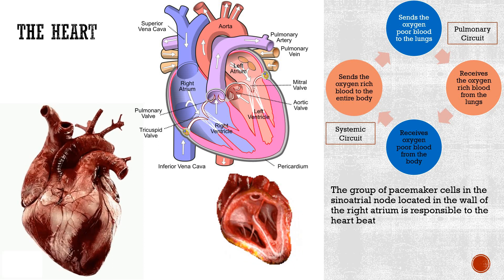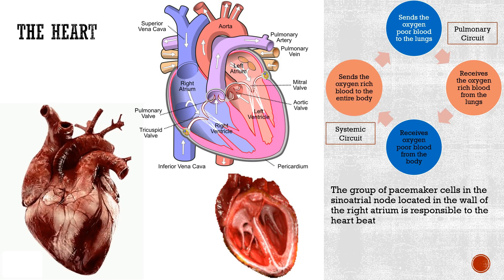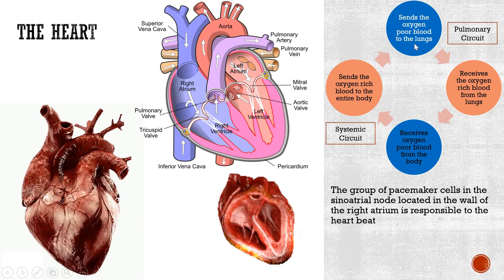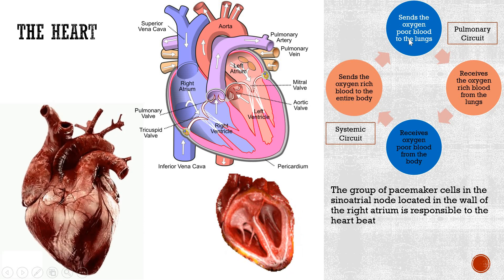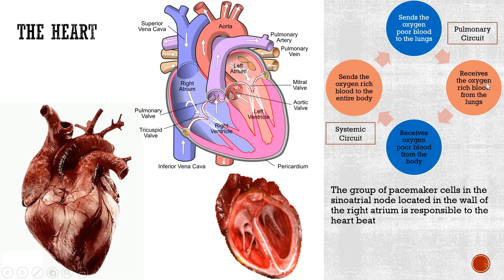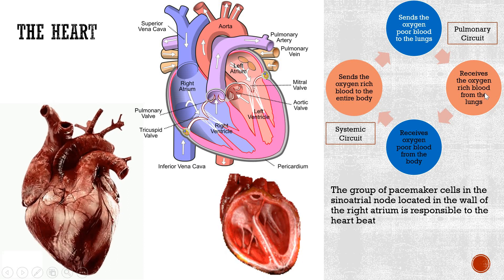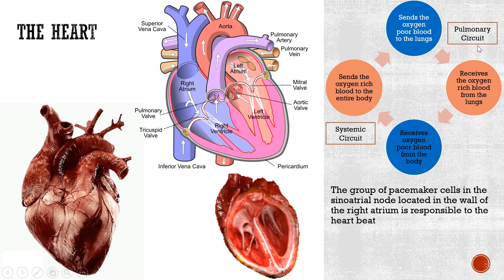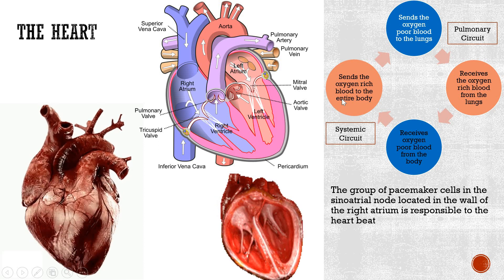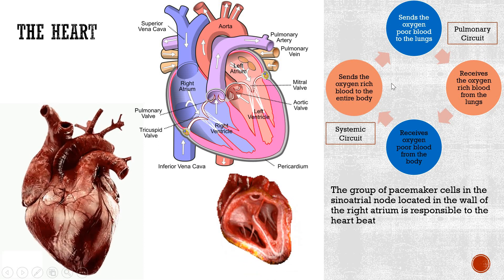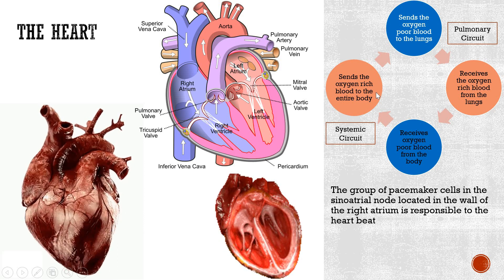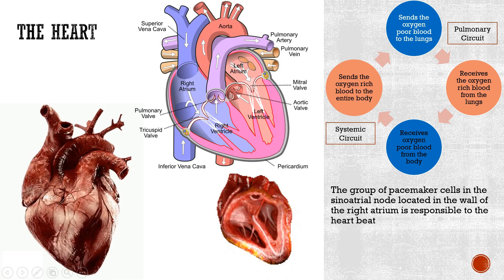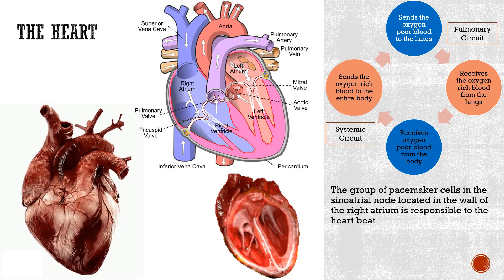In simple words, the heart performs two main functions. First, it sends oxygen-poor blood to the lungs and receives oxygen-rich blood from the lungs, which is known as the pulmonary circuit. Second, it receives oxygen-poor blood from the body and sends oxygen-rich blood to the entire body, which is called the systemic circuit.